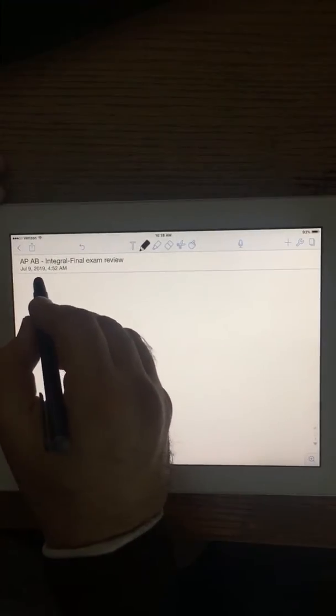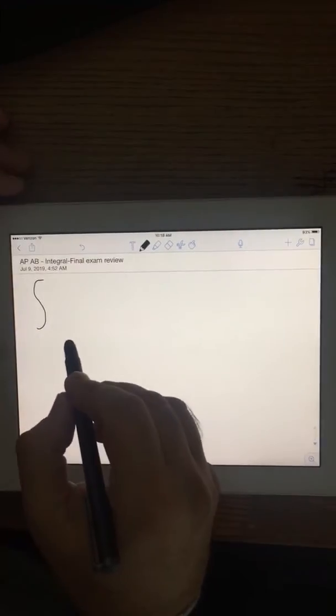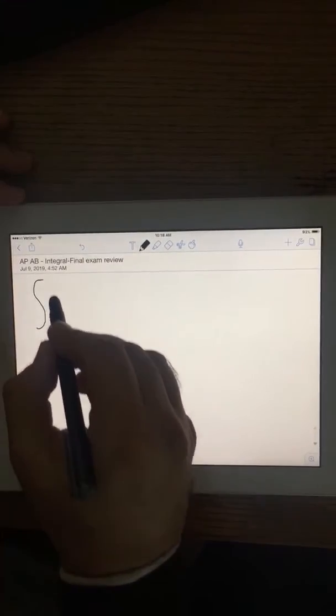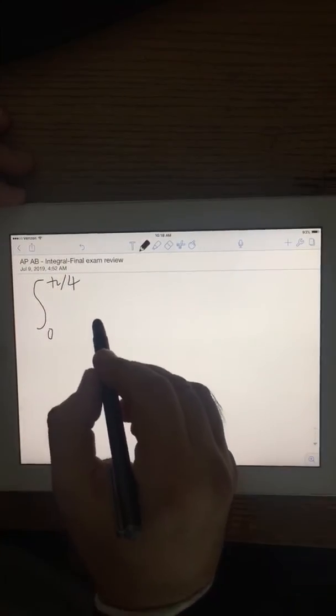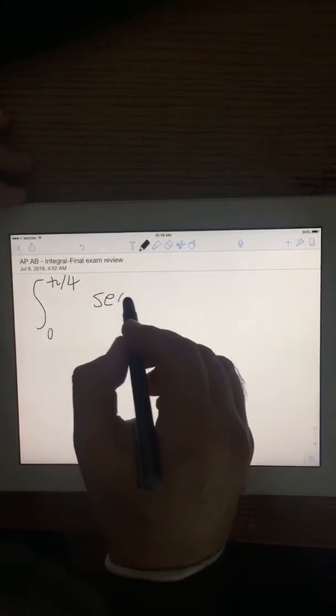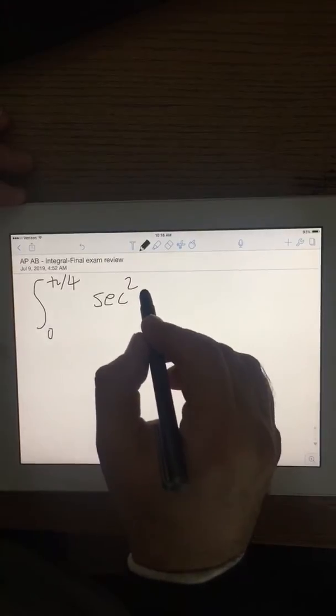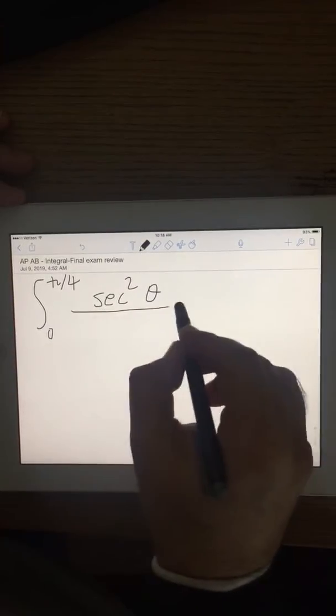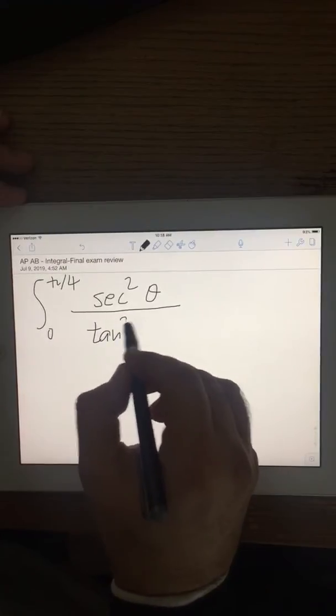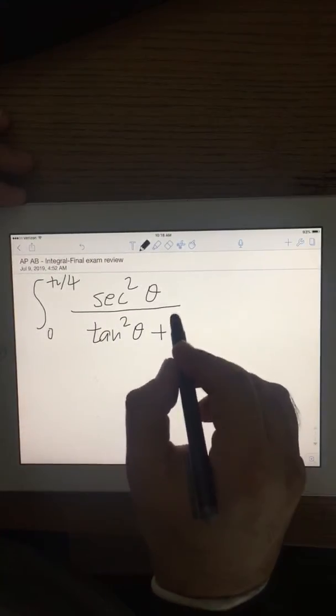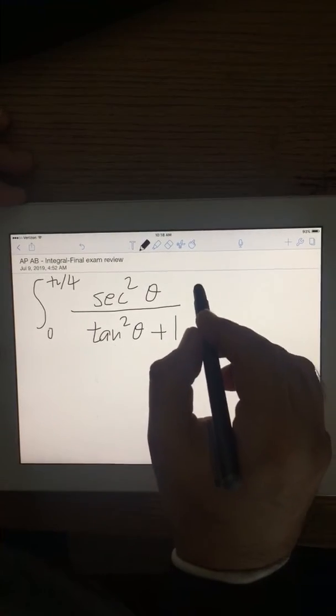Okay, integral from 0 to pi over 4, secant squared theta over tangent squared theta plus 1, d theta.